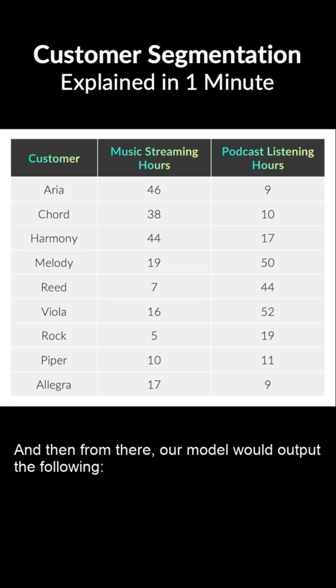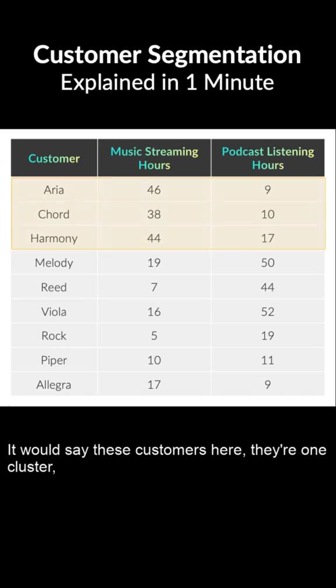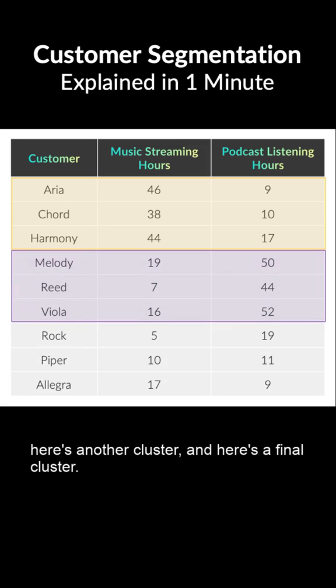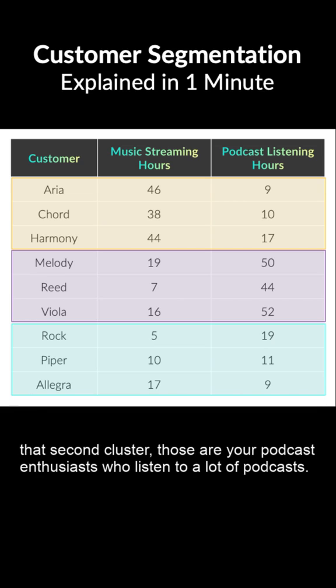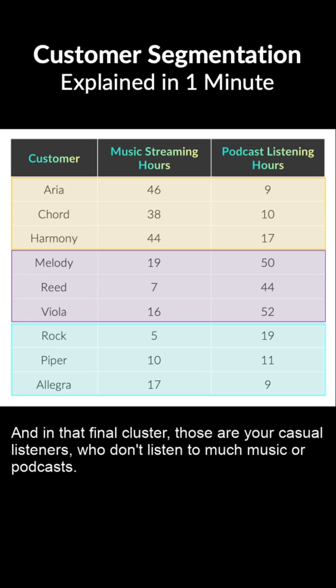From there, our model would output the following: these customers here form one cluster, here's another cluster, and here's a final cluster. In that first cluster, those customers listen to a lot more music compared to podcasts. That second cluster contains your podcast enthusiasts who listen to a lot of podcasts. And in that final cluster, those are your casual listeners who don't listen to much music or podcasts.